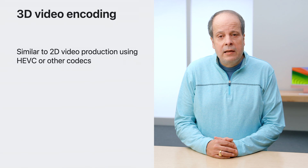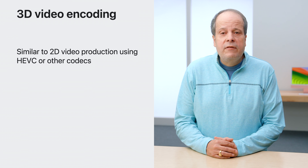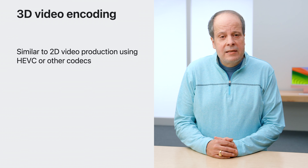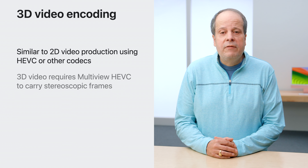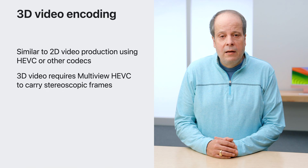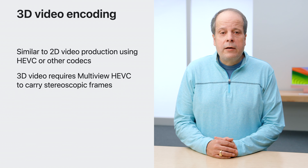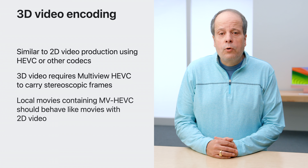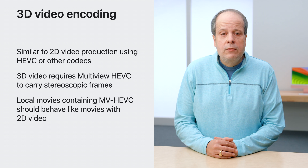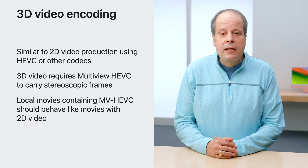Like 2D content, 3D video uses HEVC — except this time, the variation called MV-HEVC, which is required to carry the stereoscopic views. Like with 2D production, local movies with MV-HEVC can be used and should behave like other 2D video.